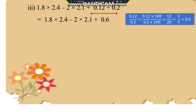So 1.8 into 2.4 minus all as it is in the division. In place of division we will get 0.6. Now what we will do? Yes, we will multiply. 1.8 into 2.4 will be 4.32. And 2 into 2.1 is 4.2.